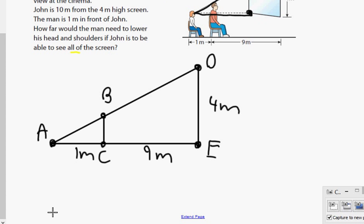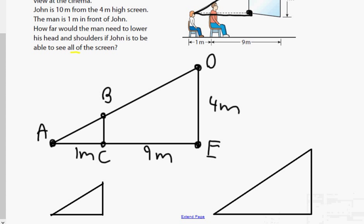Now what we know about the triangles is if I draw these two triangles separately, one is an enlargement of the other. How do I know both triangles are similar? Same angles. Same angles. Now please remember that the key thing is that the man is parallel to the screen. The man and the screen are parallel.